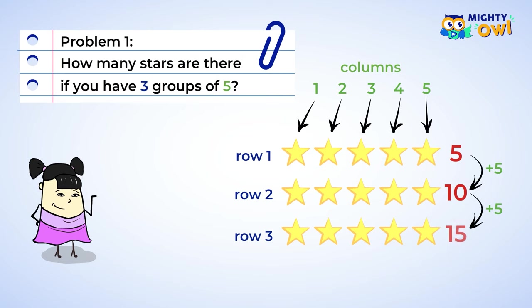By skip counting the rows, you can find out how many total stars there are. Five, ten, fifteen. There are fifteen stars.